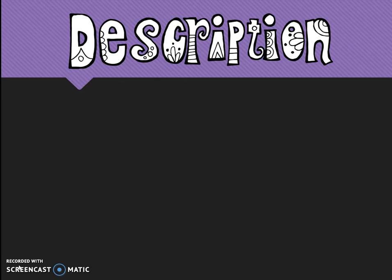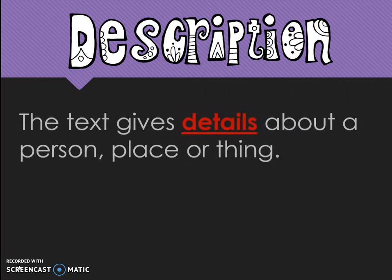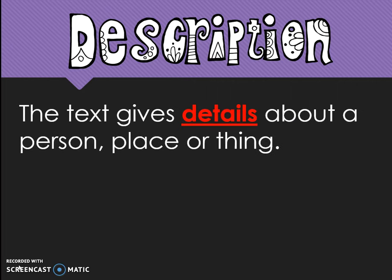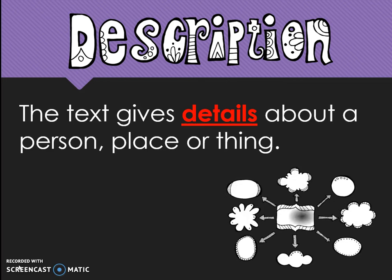The fifth and final text structure is description. Description is when the text gives details about a person, place, or thing. This web is our visual reminder.